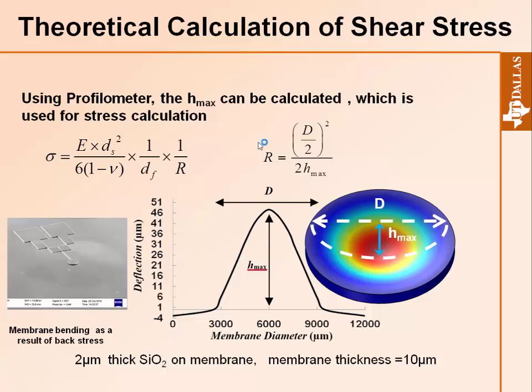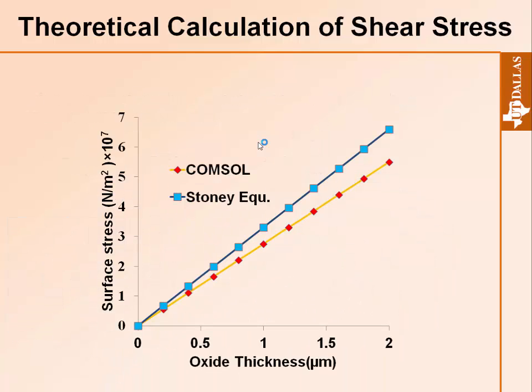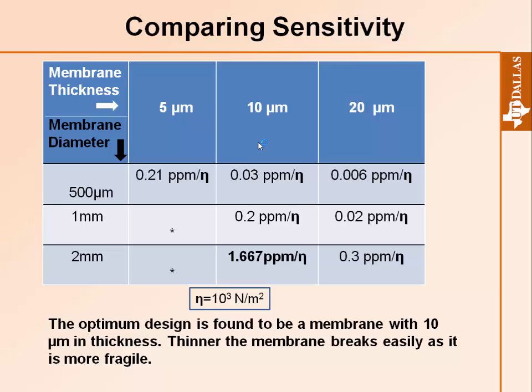We performed calculations and the output matches the COMSOL simulation results approximately. We did many measurements with different membrane thicknesses and diameters. As the membrane diameter gets bigger and membrane thickness decreases, sensitivity increases — but thinner membranes break more easily as they are more fragile. We must find an optimum design. The best result was obtained for a membrane thickness of 10 microns and a diameter of 2 mm.